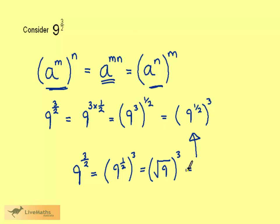Root 9 we know is 3, so we have 3 cubed. And 3 times 3 times 3 is 27. So 9 to the power 3 over 2 is 27.